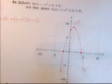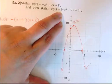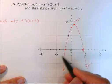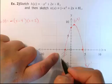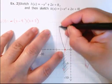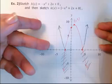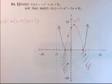Now sketch k(x) = |h(x)|, the absolute value of h(x). Absolute value means that any part of the graph that appears below the x-axis gets reflected up. Any negative y-values now become positive, so every output is positive.